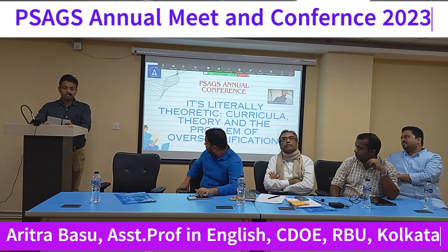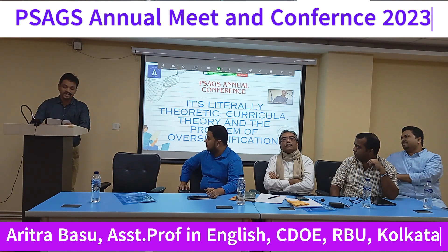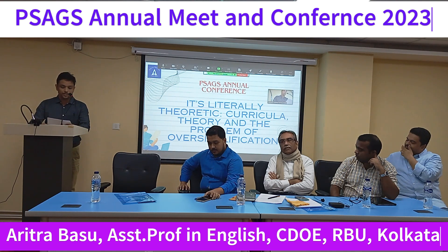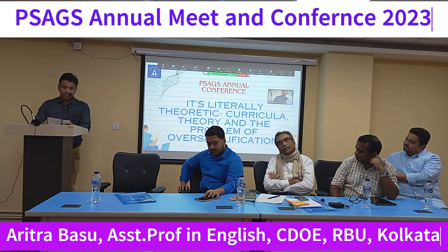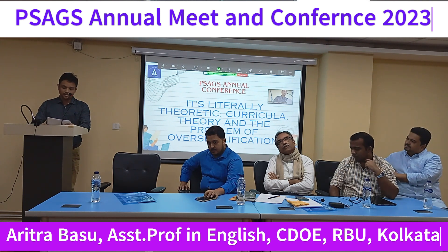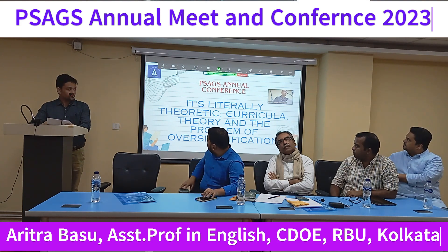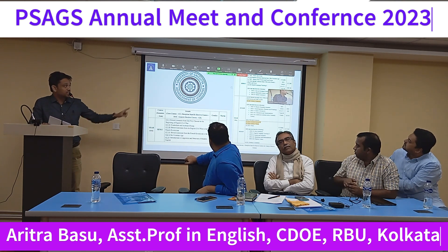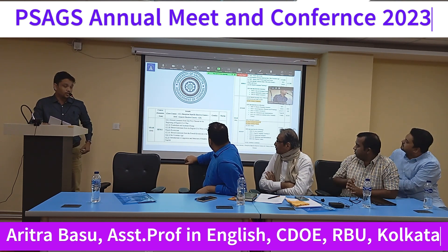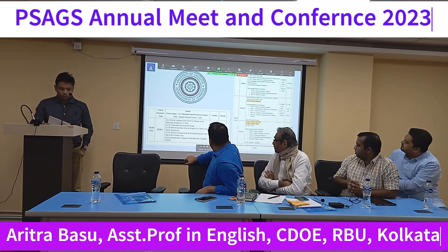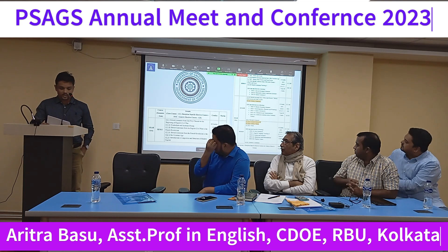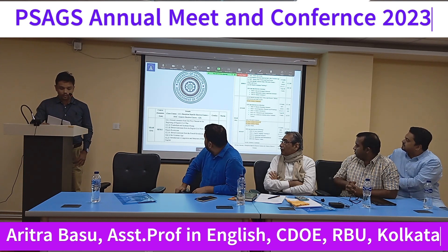CU offers 14 core courses and allows the student an apparent choice of four discipline-specific electives called DSEs from a range of 13 options in their four-semester plan for a two-year MA program. Additionally, there are two general elective courses as well. As you can see, this is the outline of the syllabus of CU and the courses highlighted are the ones that deal with literary theory. Only four courses deal with theory or criticism, which is about 28.5% of the course strength and exactly 20% of the total number of courses.